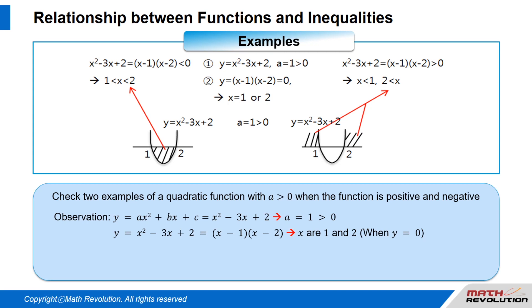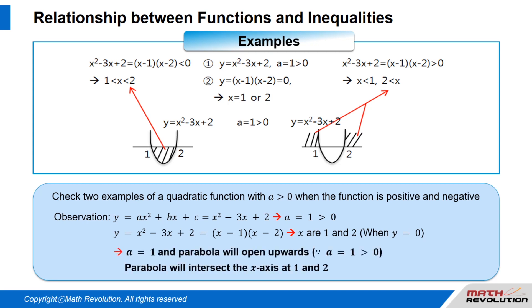y equals x squared minus 3x plus 2 equals (x minus 1)(x minus 2), which means x equals 1 and x equals 2 when y equals 0. Since a equals 1 and a is greater than 0, the parabola will open upwards and will intersect the x-axis at 1 and 2.